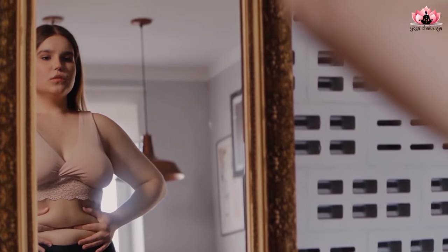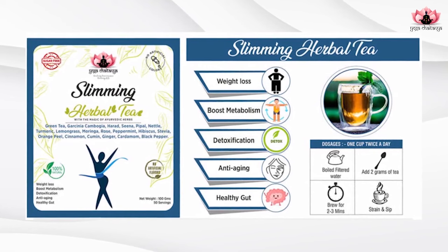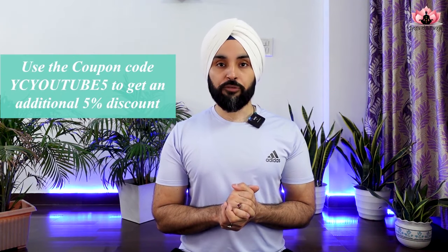A lot of people are complaining about obesity and weight gain after the pandemic due to changing lifestyle. Yoga Chaitanya's slimming and weight loss herbal tea is based on a unique formula of 16 herbs used to control weight and boost metabolism. It helps with weight loss, detoxification, slow aging, improved digestion, and elevated mood. Available at 50% discount with free shipping in India — use coupon code YCD255 for an additional 5% discount. Link is in the description.